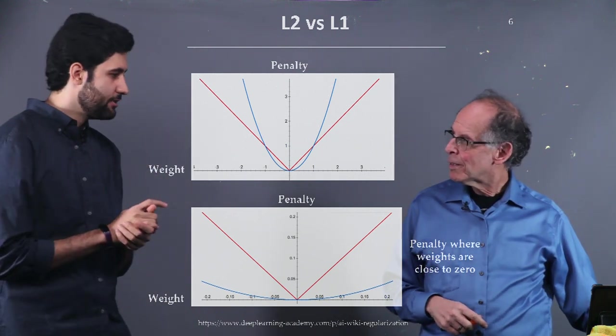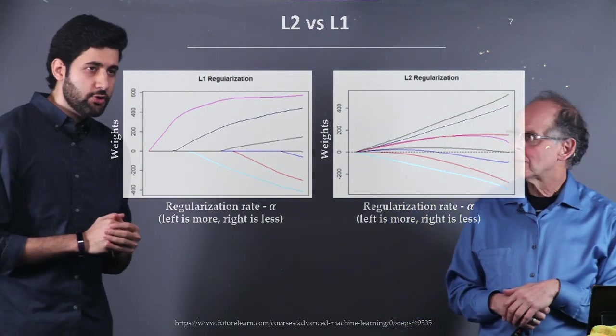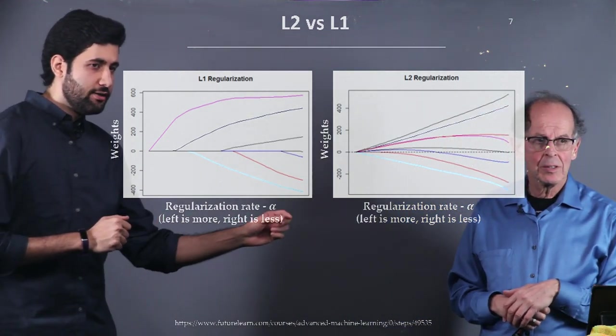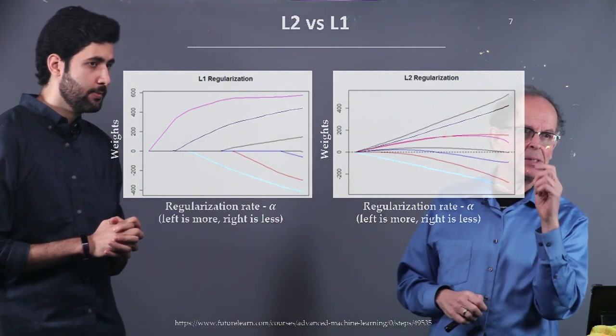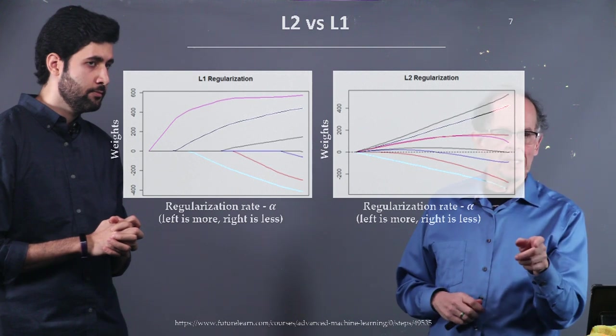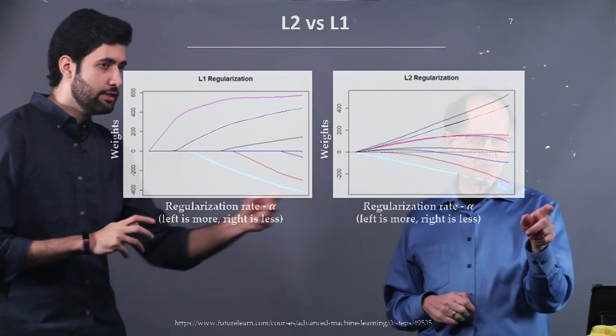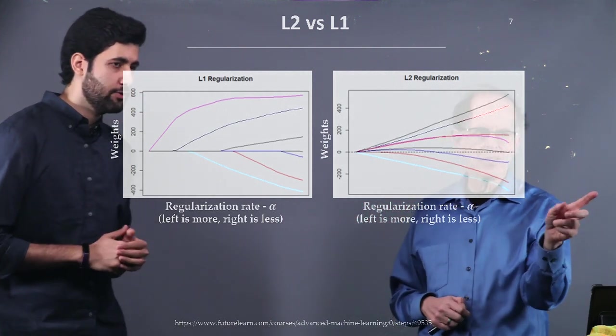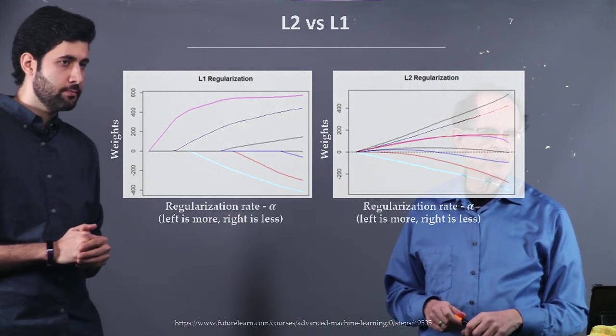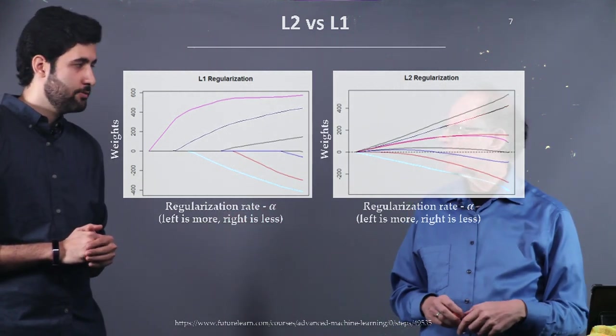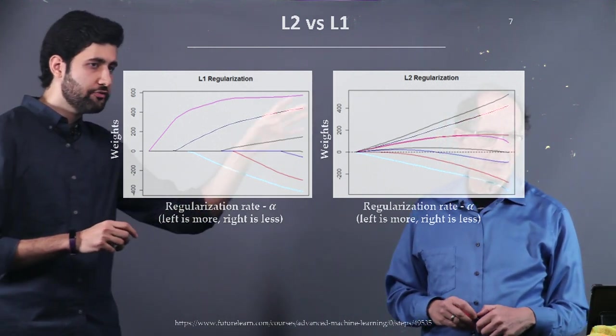So if you see that in the next slide, this is exactly this phenomenon. So if we change the regularization rate, alpha is the regularization parameter, and it increases as we go from right to left. So, take us through these curves. I assume that every color represents a weight. Yeah, different weights. So, we have different weights, and we can see that for L2 regularization, they are just pulled towards zero.